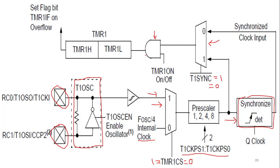The output of the multiplexer is given as input to an AND gate, whose job is to either enable or disable Timer1. This is controlled by the TMR1ON bit. Setting TMR1ON to 1 allows the clock to pass to the timer register, turning on the timer. Setting it to 0 blocks the clock, turning off the timer.